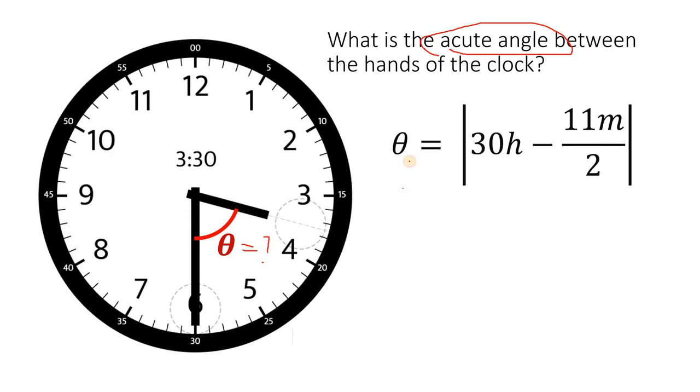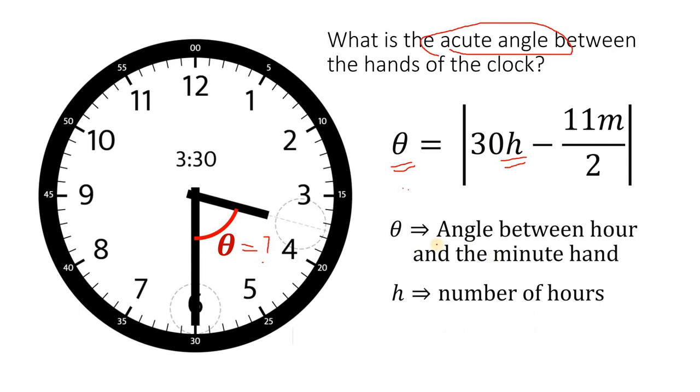What are those variables? Theta is the angle between the hour hand and the minute hand. h is the number of hours. And m is the number of minutes.